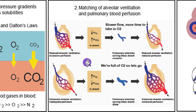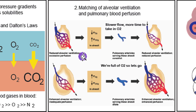Matching alveolar ventilation and pulmonary blood perfusion: there's no use having oxygen in the alveolus if there's no blood to pick it up, and vice versa. The lungs match oxygen with blood by having capillaries react in the opposite way to elsewhere in the body. In the biceps, low oxygen causes capillaries to dilate; in the lung, low oxygen causes capillaries to constrict, slowing blood flow so there's more time to pick up oxygen — just like narrow streets slow traffic.